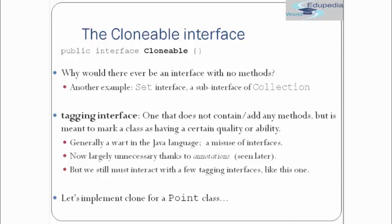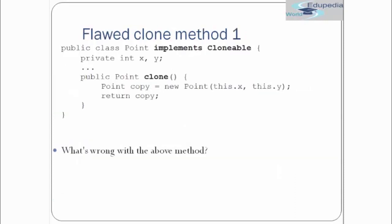Let's implement clone for the Point class. Earlier we used a copy constructor; now let's create an object using another object through clone. This is a flawed clone method. We have a public class Point implementing Cloneable, and we override the clone method. We create another object by doing new Point and passing this.x and this.y in the constructor, then returning copy.